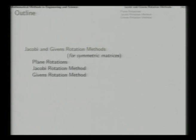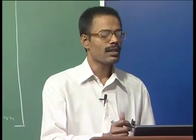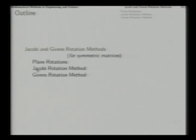The first method to find a suitable similarity transformation is based on plane rotations. Note that from now onwards most of our discussion will be focused on symmetric matrices, which have a lot of interesting properties. In this topic we will first try to see the geometric implication of plane rotations and how they give us suitable basis change and similarity transformation matrices. Based on plane rotations we concentrate on two methods: the Jacobi rotation method and the Givens rotation method.